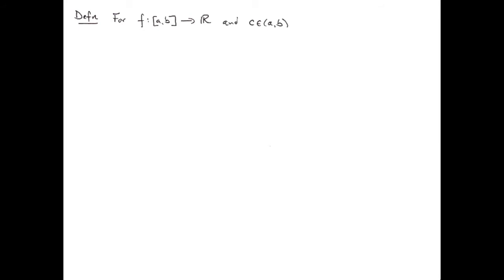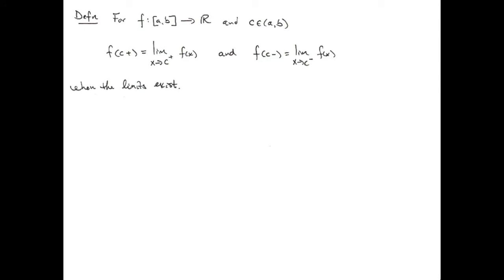If we have a function F on a closed interval A to B, and we pick any value C in the interior of that interval, let's introduce notation for the left and right-hand limits. The limit as X approaches C from the right of F of X will be denoted F of C-plus. Likewise, the limit as X approaches C from the left will be denoted F of C-minus. We say F of C-plus and F of C-minus exist when those limits exist.